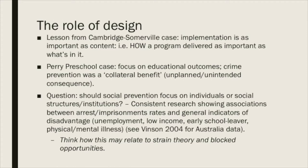There is consistent research showing associations between arrest and imprisonment rates and general indicators of disadvantage, such as unemployment, low income, early school leaver status, physical and mental illness, and so on. You may want to think about how this relates to structural strain theory and blocked opportunities from Merton. Given this link between disadvantage and arrest rates, do we address individuals or the social structures and institutions around them as well?